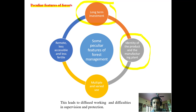The second peculiar feature is the identity of the product and the manufacturing plant. In a normal business enterprise, the manufacturing plant and the product are separate and can be distinguished. However, in forestry, the trees are the manufacturing unit and the increment we get from the trees is the product. The manufacturing plant and the product are inseparable — both are the same — making it difficult to separate the product from the plant on a short-term basis.